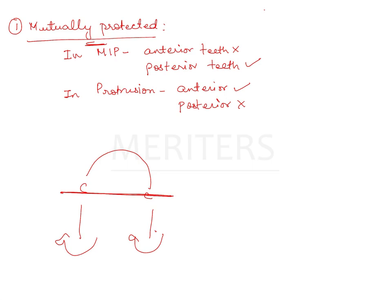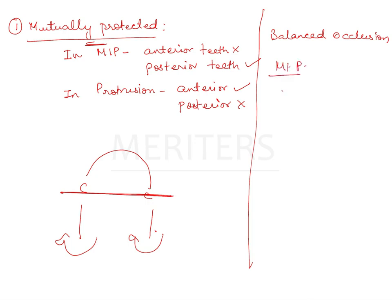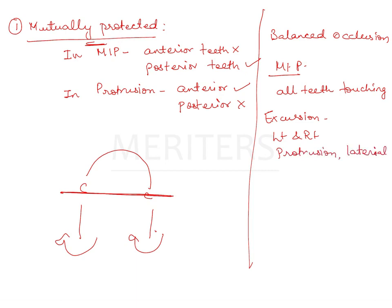If a maxillary complete denture opposes natural dentition, teeth arrangement follows the natural teeth in maximum intercuspation. But when restoring upper and lower posterior teeth on both sides, you go for balanced occlusion. Balanced occlusion means in maximum intercuspation all teeth are touching — anterior teeth have very light contact with their overbite and overjet, posterior teeth are in occlusion — and in all excursions, right, left, protrusion, and lateral movements, there is contact on both sides, keeping the denture stable.